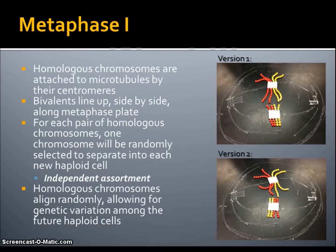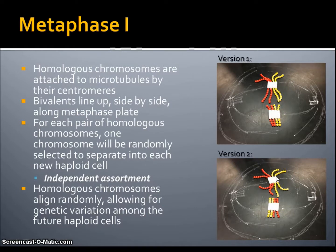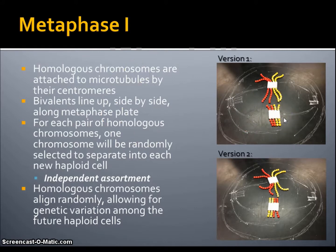The next step in meiosis is metaphase I. This is when homologous chromosomes are attached to microtubules by their centromeres, which we can observe here in each of our variations. Bivalents line up side by side along the metaphase plate, or the equator, down the middle of the cell. For each pair of homologous chromosomes, one chromosome will be randomly selected to separate into each new haploid cell. This process is called independent assortment, and it also leads to genetic variation within cells.